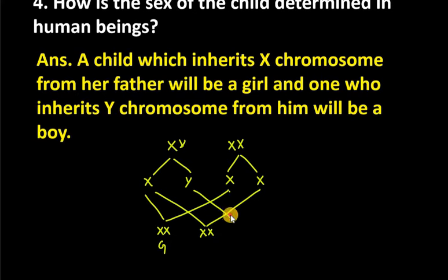But X and Y combination will be a male. Again, X and Y will be a male. So we understand that if a child inherits X chromosome from her father,